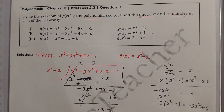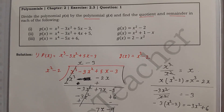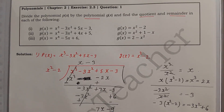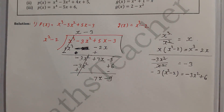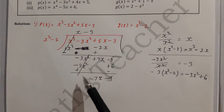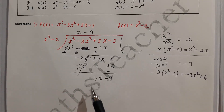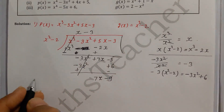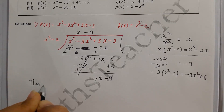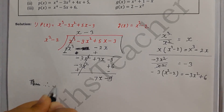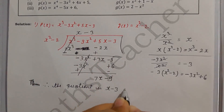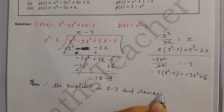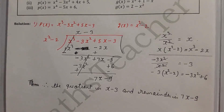After changing signs: minus 3x² and plus 3x² cancel. Then 7x remains, and minus 3 minus minus 6 gives minus 3 plus 6 which is... we get the remainder. The degree of the remainder is 1, which is less than the degree of the divisor, which is 2, so division stops. Therefore, the quotient is x minus 3 and the remainder is 7x minus 9.